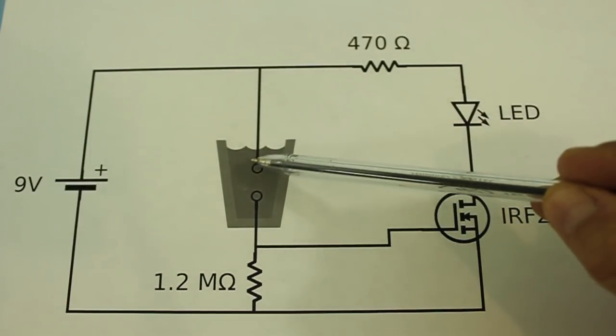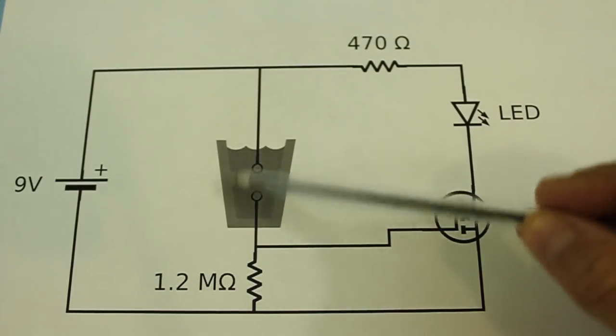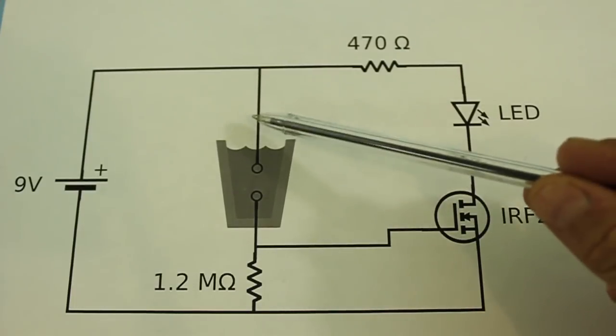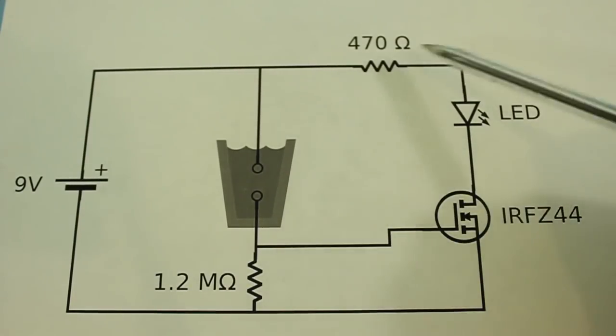So when the water is above the two contacts, the voltage can reach the gate of the MOSFET and it enters into conduction, so the circuit is completed and the LED turns on.